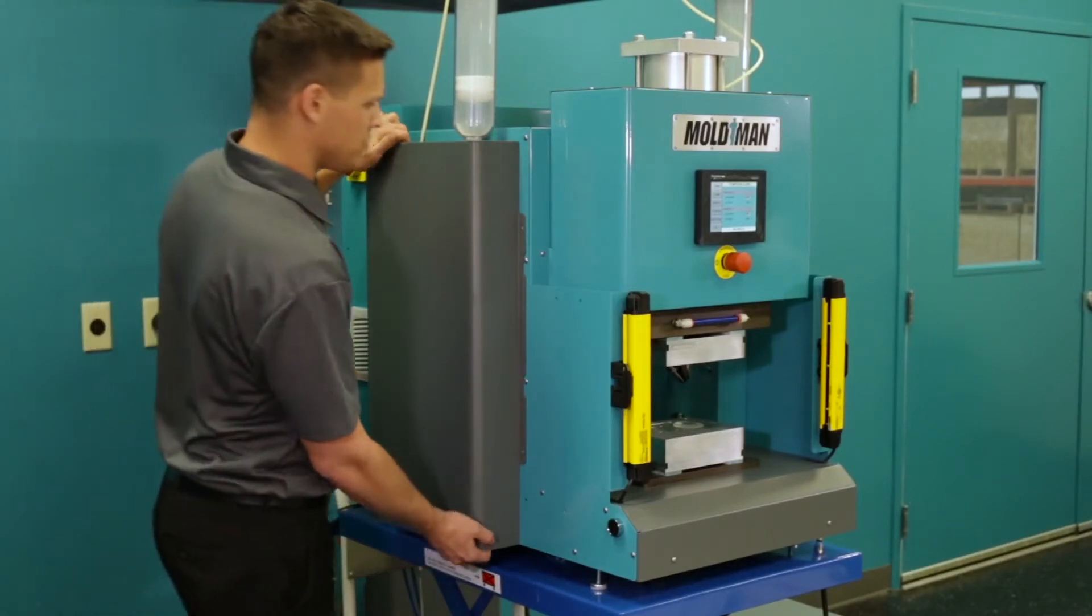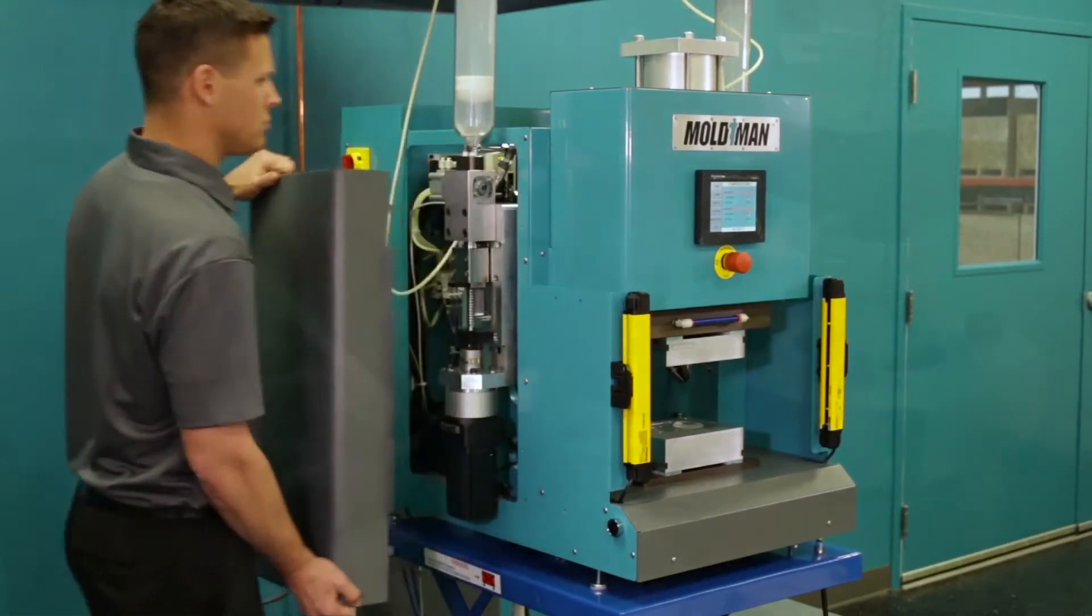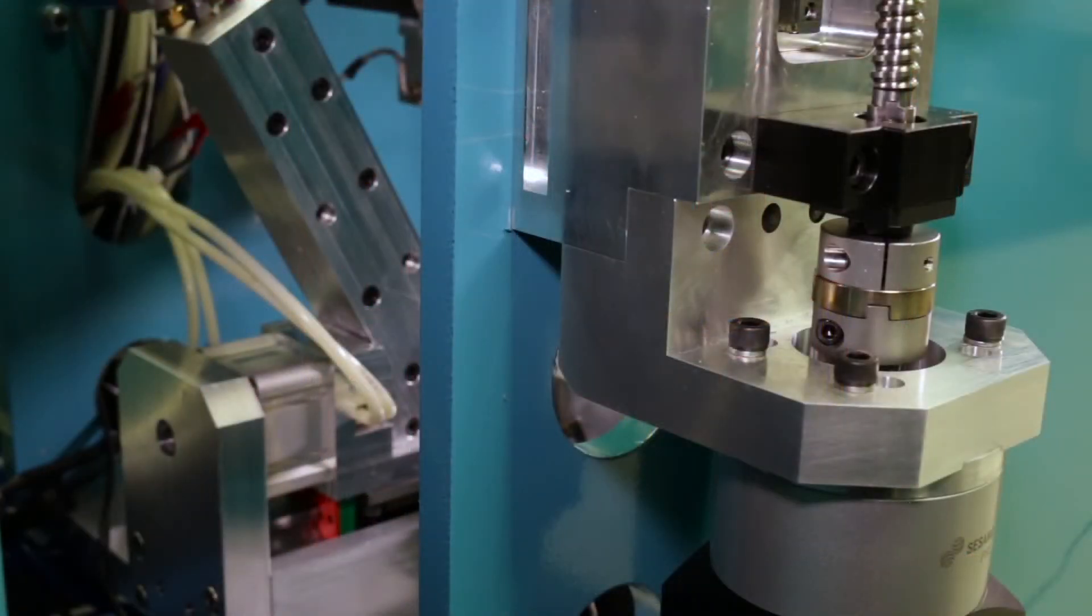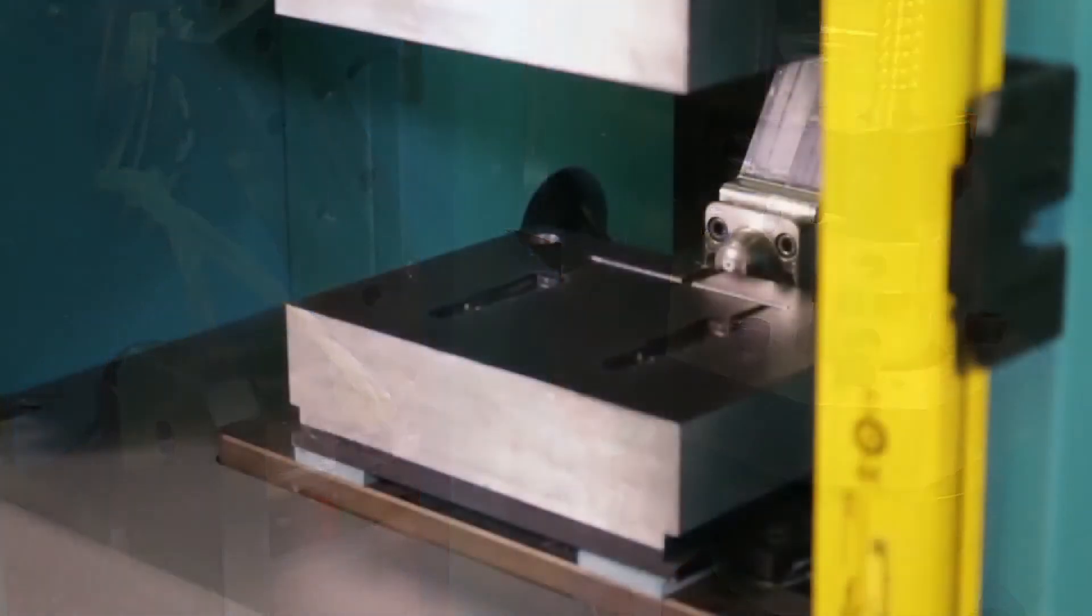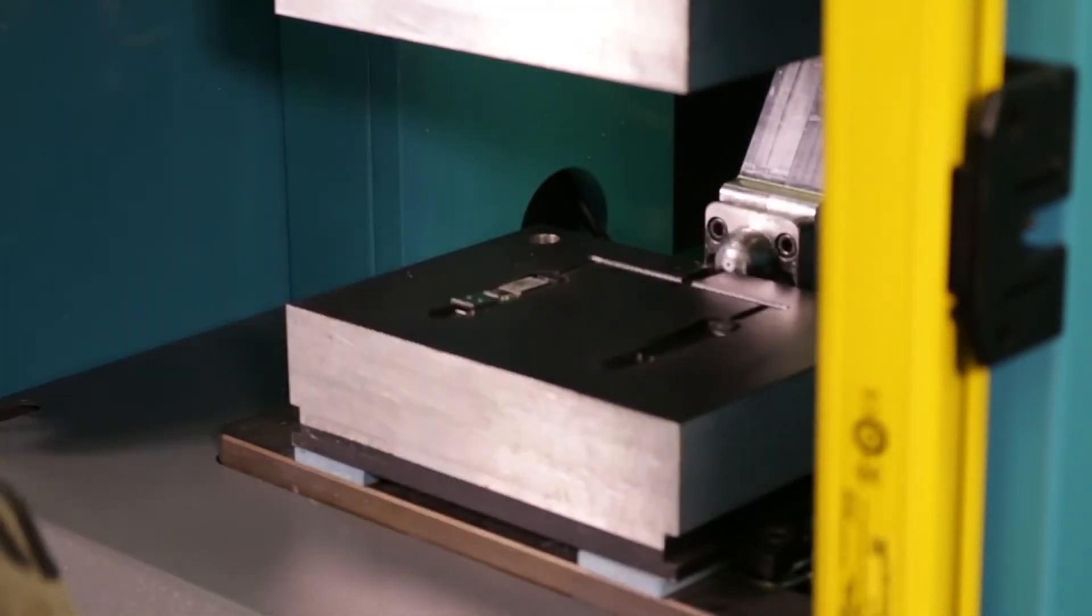The Moldman 2050 incorporates a high-resolution servo-drive plunger delivery system that can accurately meter up to one-hundredth of a gram. This allows for a more accurate and consistent process.